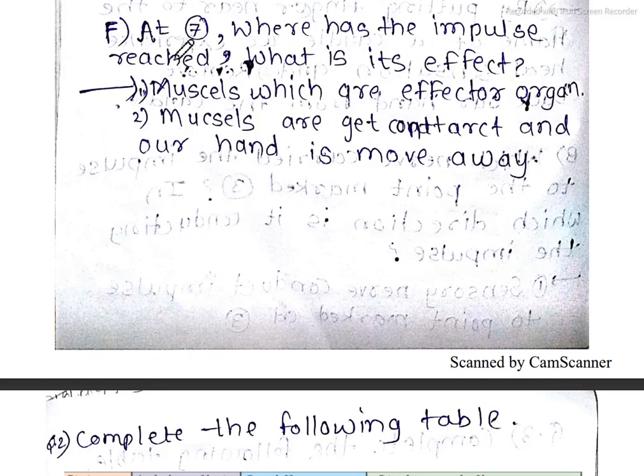Part F: At seven, where has the impulse reached? What is the effector? We call it muscles, which are the effector organ. Second point is that muscles get contracted and our hand is moved away. This is what we call reflex action. Muscles get contracted, our hand is moved away.